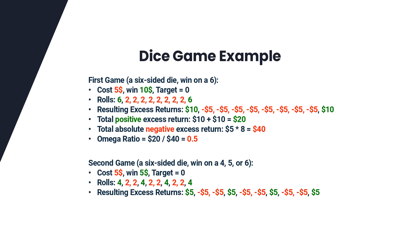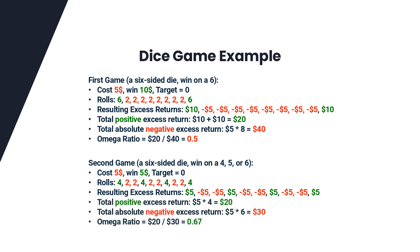This math gives us an Omega Ratio of 0.5. Transitioning to the second game, you hit a 4 on 4 occasions, netting you $5 each time. However, for the rest of the 6 rolls, a 2 shows up, setting you back $5 each time. Even though the total gain is identical to the first game at $20, the total losses are lower, totaling $30. This results in a slightly better Omega Ratio of 0.67. Interestingly, even though the sum of winnings from both games is identical, the Omega Ratio tilts in favor of the second game. This is indicative of a better risk-reward trade-off, thanks to more frequent wins. The real charm of the Omega Ratio is its ability to factor in not just the wins and losses, but also the probability of these outcomes, giving us a more holistic view of our investment.